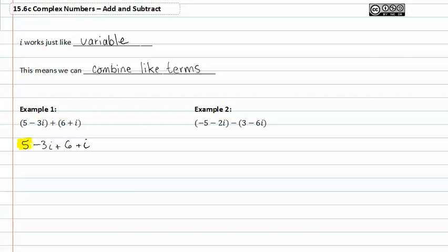Notice that 5 and 6 are like terms, and likewise -3i and i are also like terms. Let's go ahead and add those like terms together. We get 11-2i.